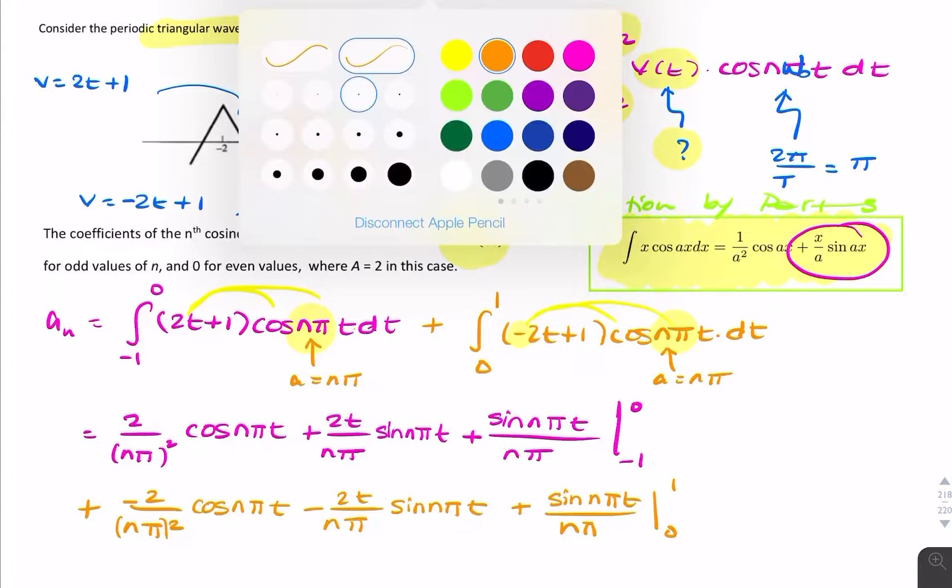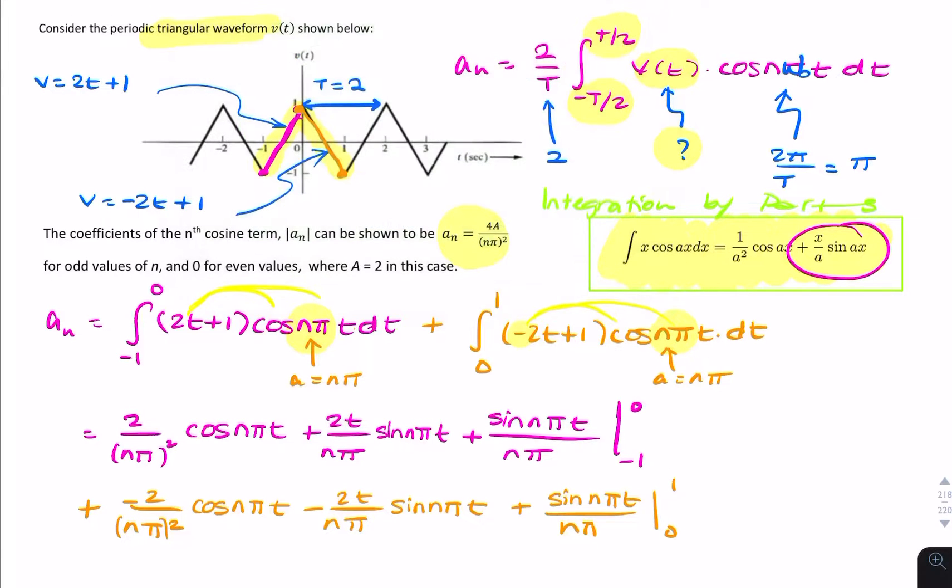So now let me just remind you that sine n pi is always 0, and cosine n pi is either minus 1 or 1, depending on whether n is even or odd. So if n is even it's 1, and if n is odd it's minus 1.